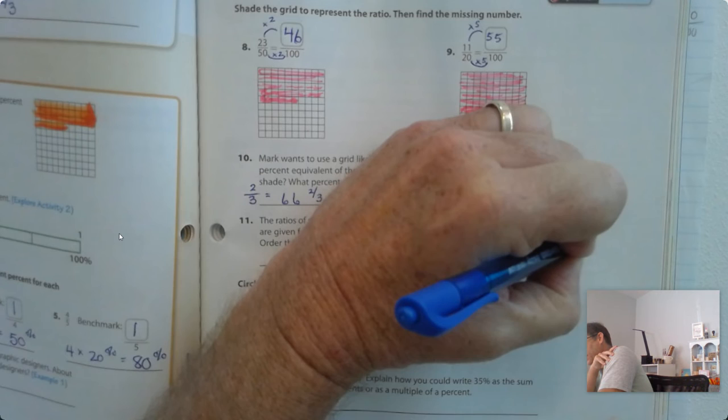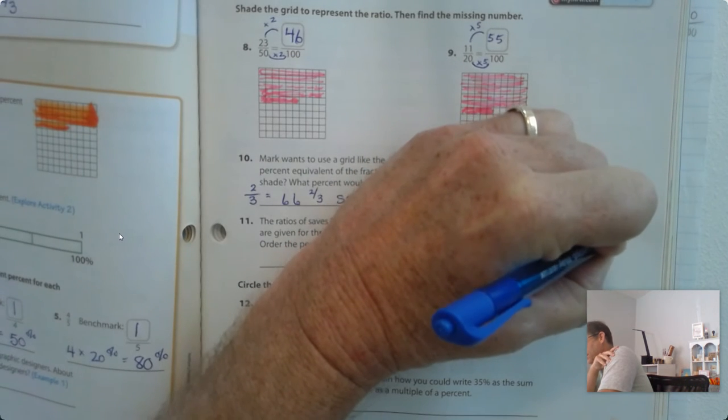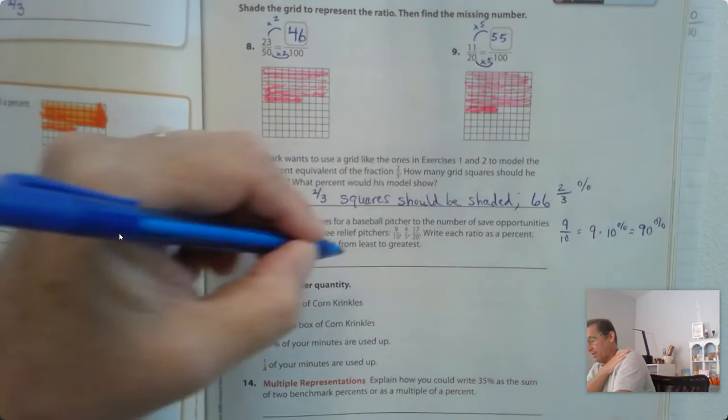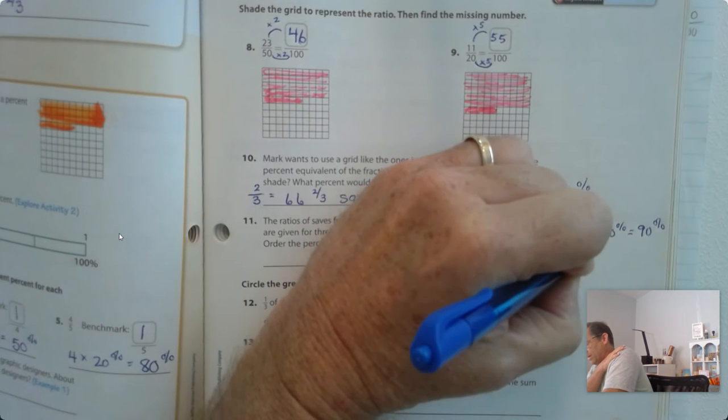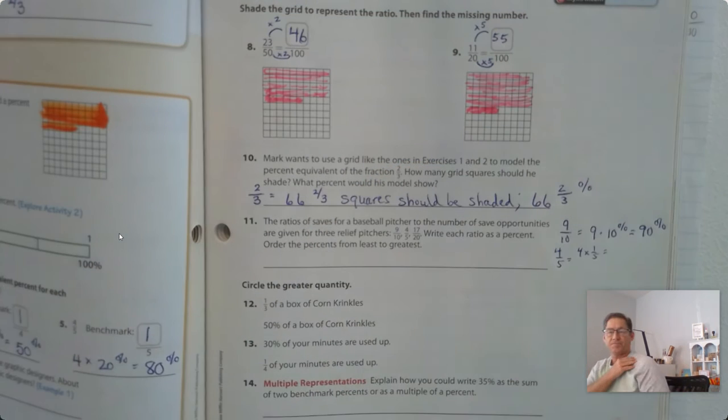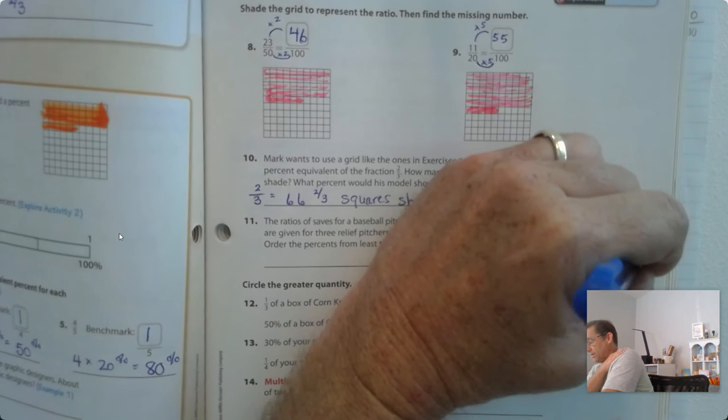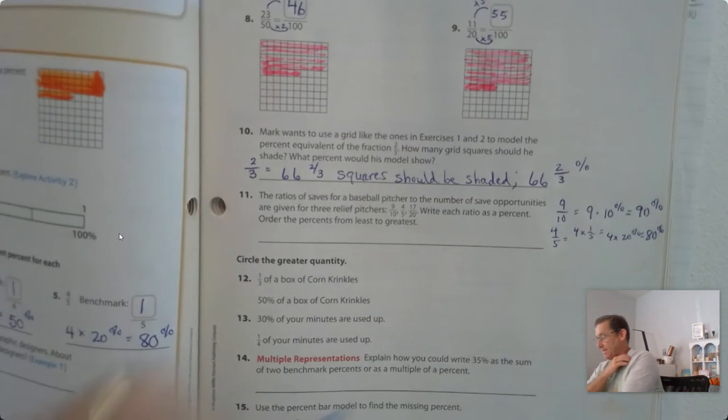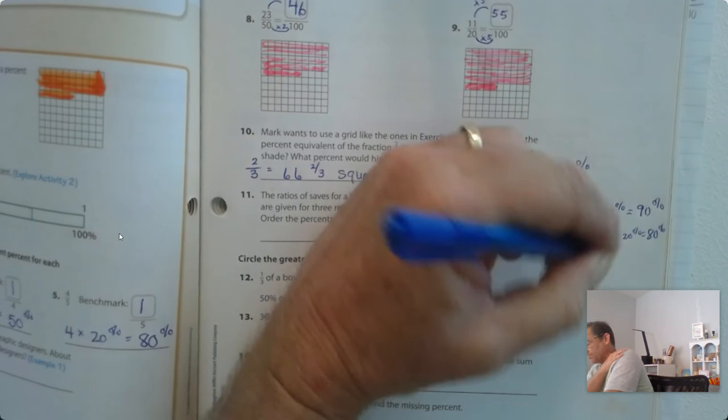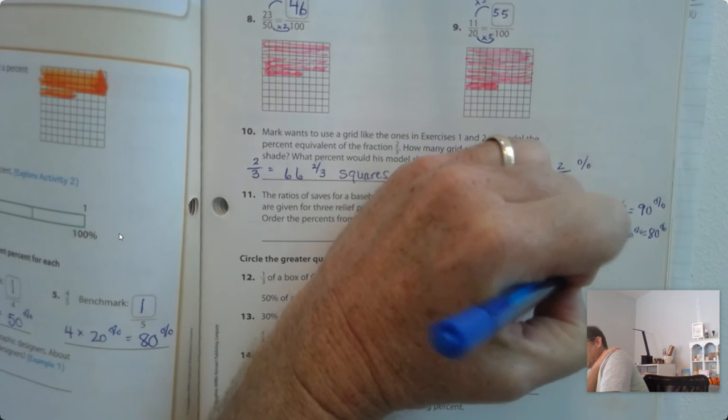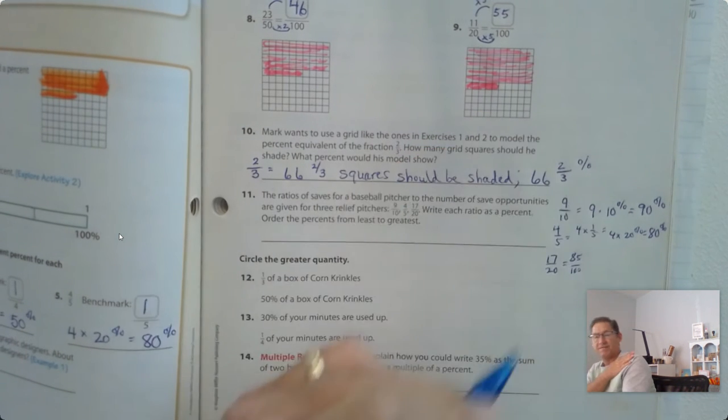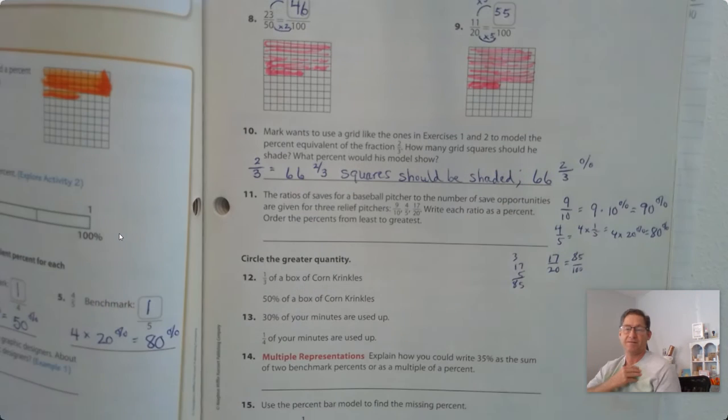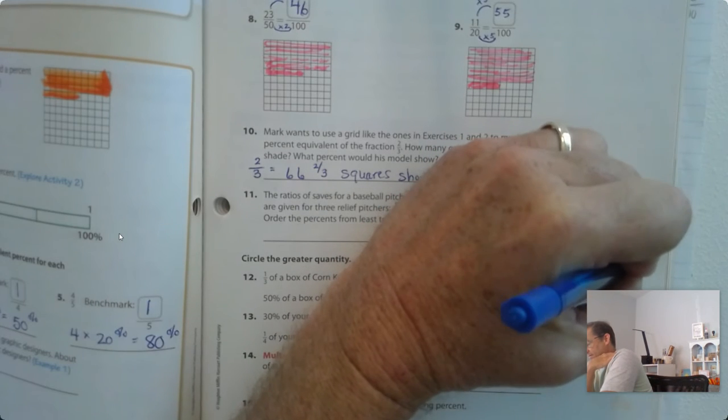Well, 9 tenths is equivalent to 9 times 10%, so that's 90%. 4 fifths is the same as 4 times 1 fifth, which is equal to 4 times 20%, so that would be 80%. And 17 20ths, if we change that to 100, it would be 5 times 17, or 85. 5 times 17 is 85, so 85%.